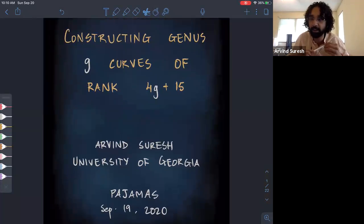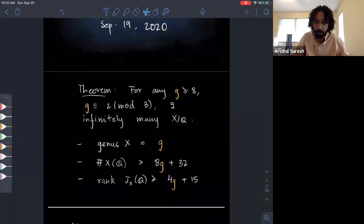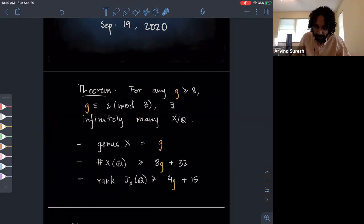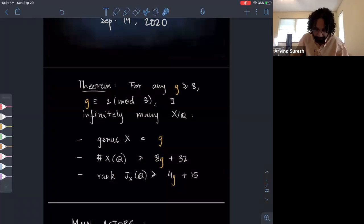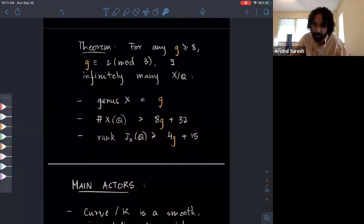Today's talk is about constructing curves with lots of rational points and large Mordell group in the Jacobian. The main theorem is that if you have an integer G that's at least 8 and with genus 2 mod 3, then there exists infinitely many curves over Q of genus G having at least 8G plus 32 Q points and having Mordell rank at least 4G plus 15. Let me define the things that I'll need for today.